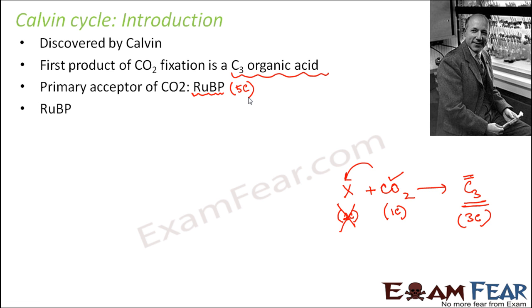So what is RUBP? It is ribulose 1,5-biphosphate. So there are 2 phosphate groups in this and there is a ribose sugar. So there are 5 carbon atoms here. So it is a 5-carbon compound to which when carbon dioxide is added a 3-carbon compound organic acid is formed. So that is how the Calvin cycle starts.